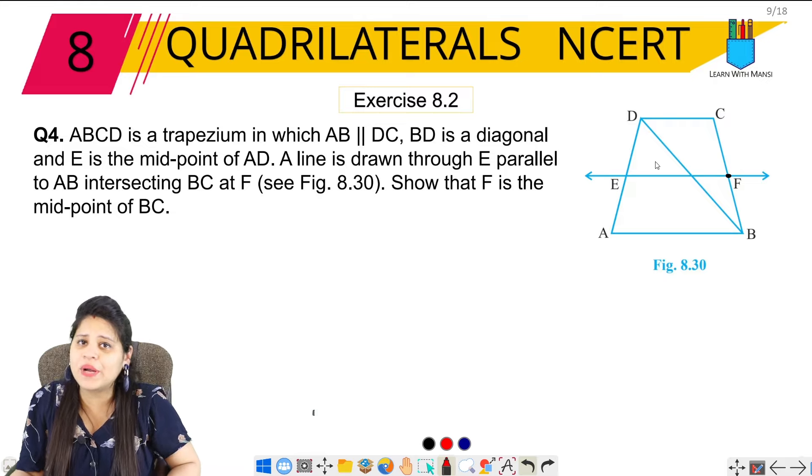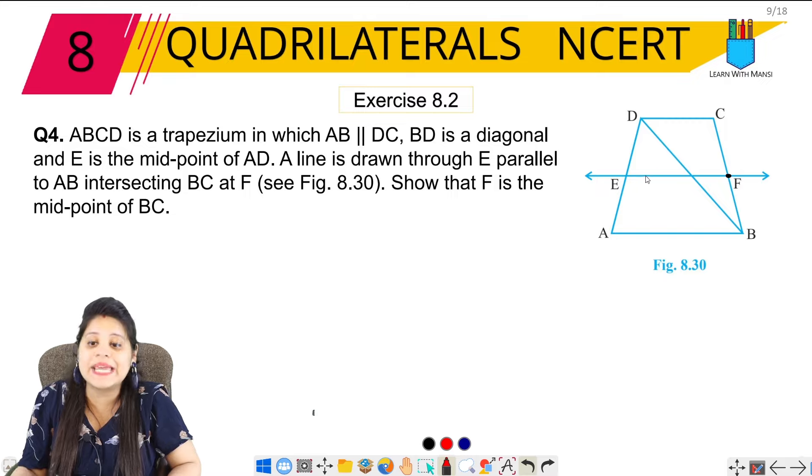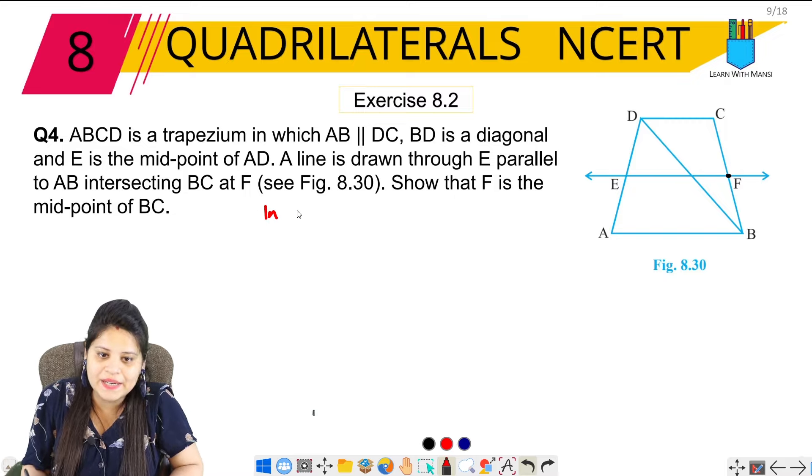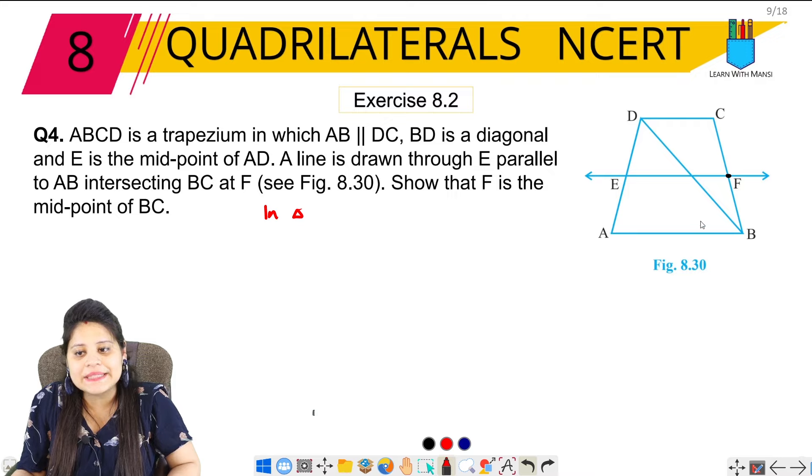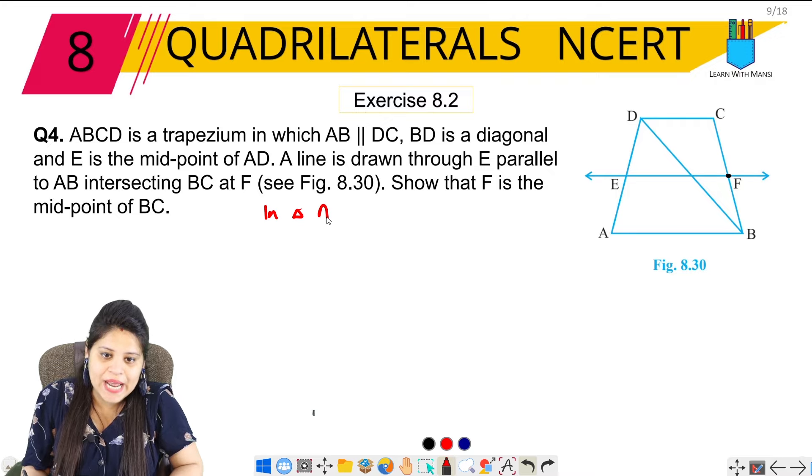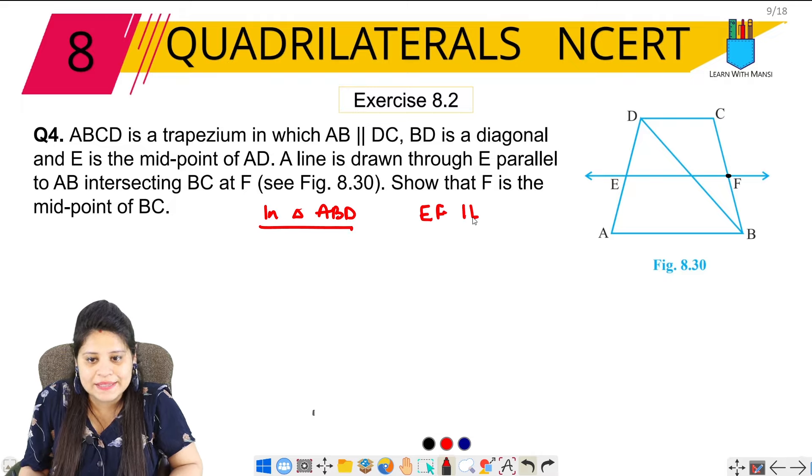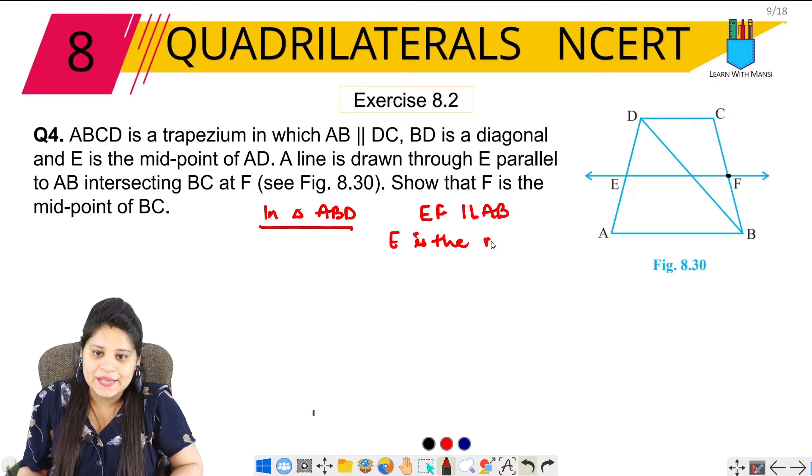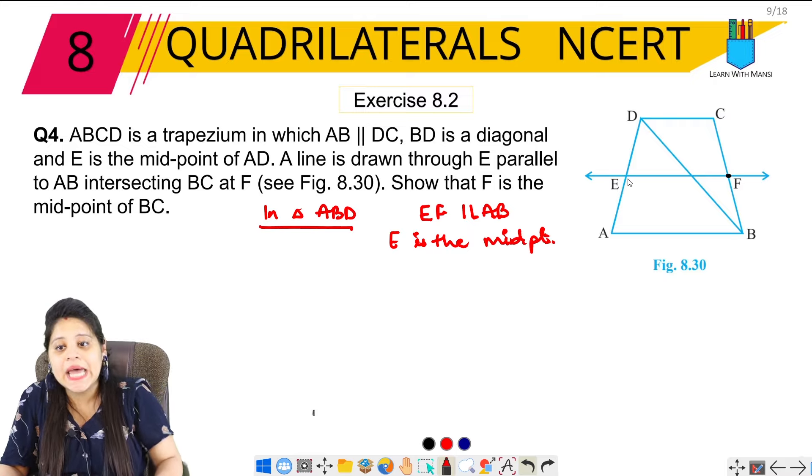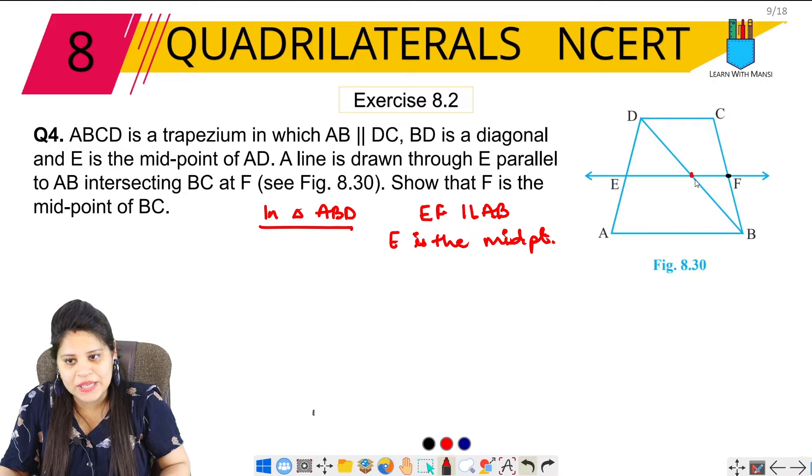First, we will use midpoint theorem. But where will we use it? So in triangle, first let's talk about ABD. If I talk about ABD, I have given that EF is parallel to AB and E is the midpoint. So by converse of midpoint theorem, we will use midpoint. If I talk about ABD, we will give a name to this point. Let's call this G.